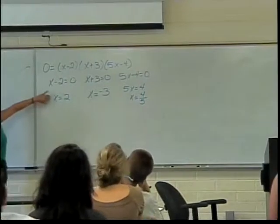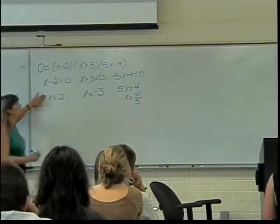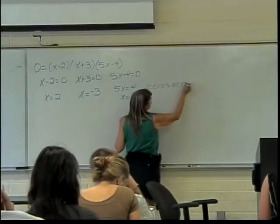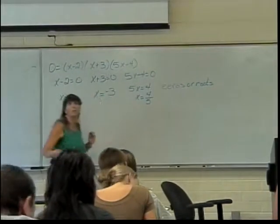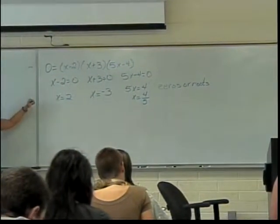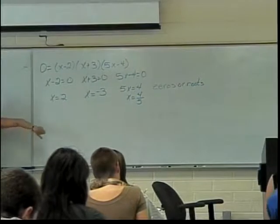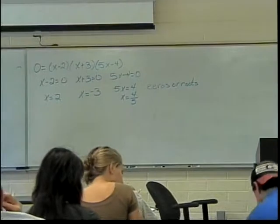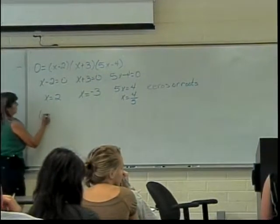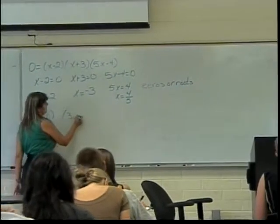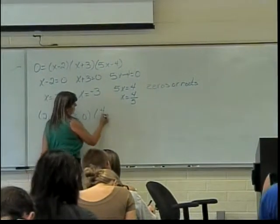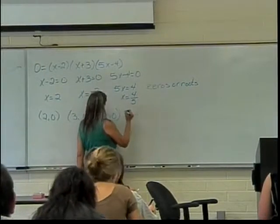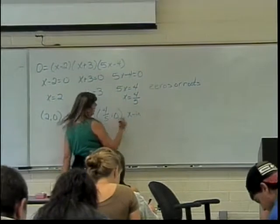The things that I have listed here are the zeros or roots of that polynomial. So, how do I go from my roots to my x-intercepts? Making points. So two zero, negative three zero, and four fifths zero are my x-intercepts.